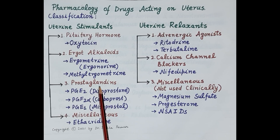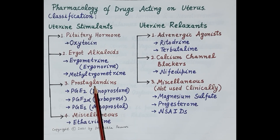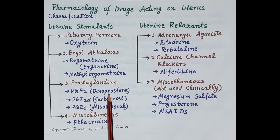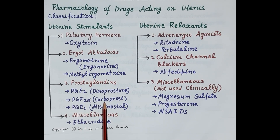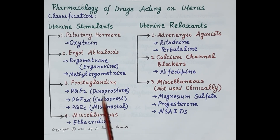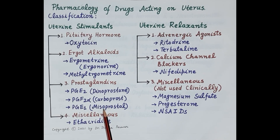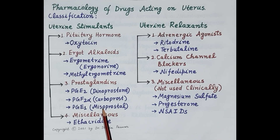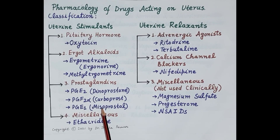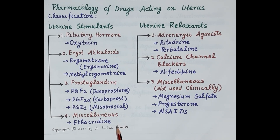The third category of uterine stimulants are prostaglandins, including synthetic analogues of prostaglandin E2 (dinoprostone), prostaglandin F2 alpha (carboprost), and prostaglandin E1 (misoprostol). These synthetic prostaglandin analogues induce uterine contractions and are indicated for inducing second trimester abortions between the 13th to 20th week of pregnancy. A miscellaneous uterine stimulant is ethacridine.